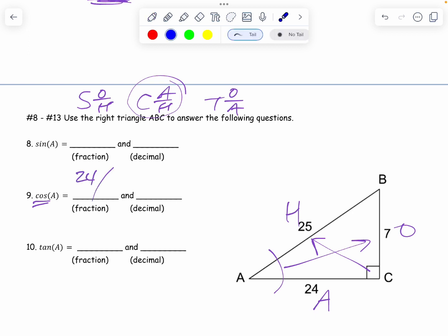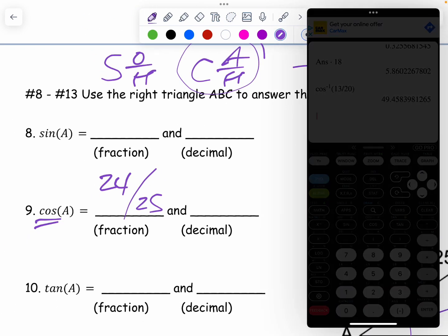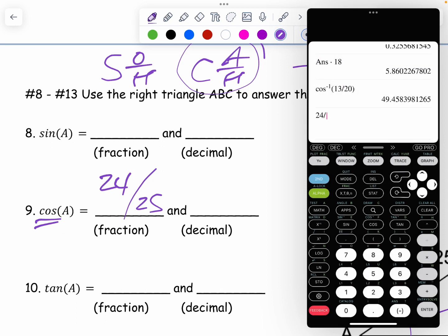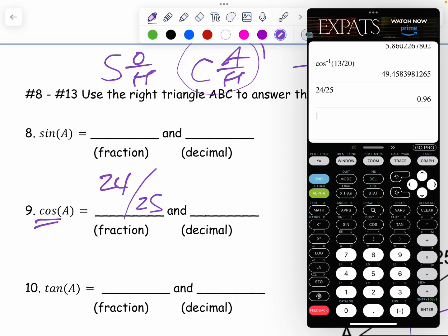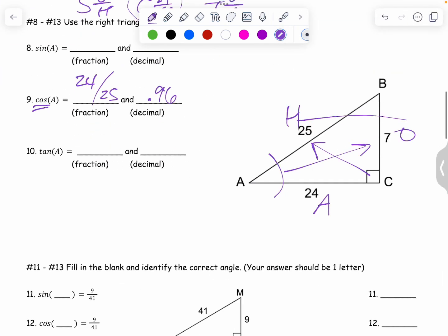And the H is the 25. And what I'm going to do is put the 24 over 25 in my calculator. 24 divided by 25. And I get 0.96. Excellent. So there's that.